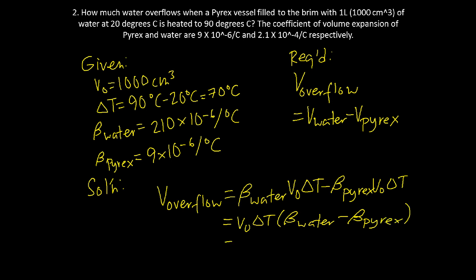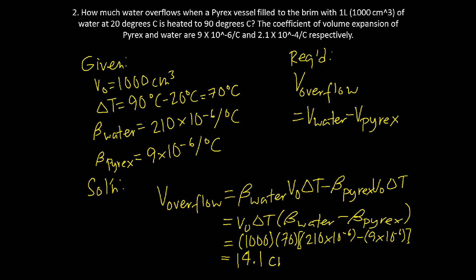Substituting the values: 1,000 times 70 times (210 times 10 raised to negative 6 minus 9 times 10 raised to negative 6). Our final answer is 14.1 cubic centimeters. That's it for thermal expansion — I hope you learned a lot. Please subscribe to our channel for more videos.